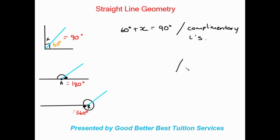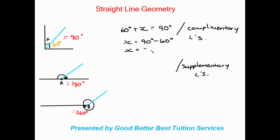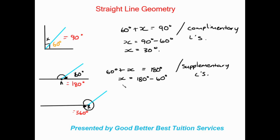With the straight line, our reason is supplementary angles, or angles on a straight line equal to 180 degrees. So we get x is equal to 90 degrees minus 60 degrees, which gives x equal to 30 degrees. Similarly, if they gave us 60 degrees on a straight line, it's going to be 60 degrees plus x equals 180 degrees, so x is equal to 120 degrees — the size of that angle.